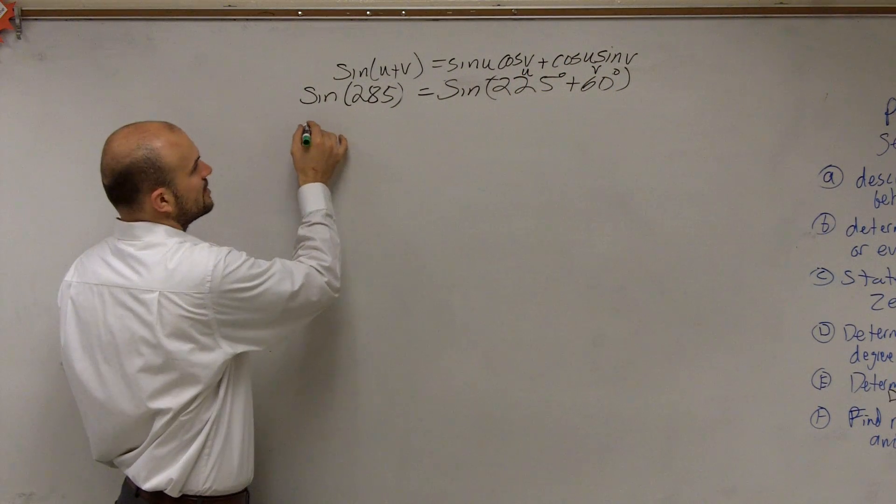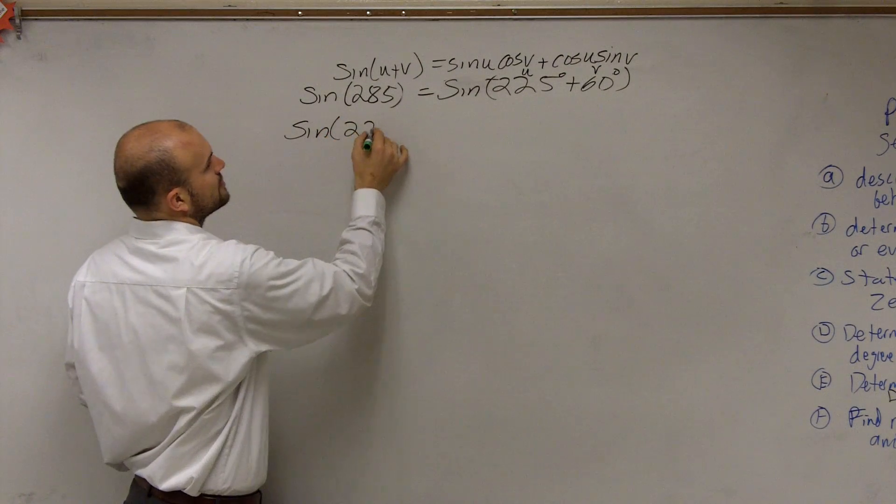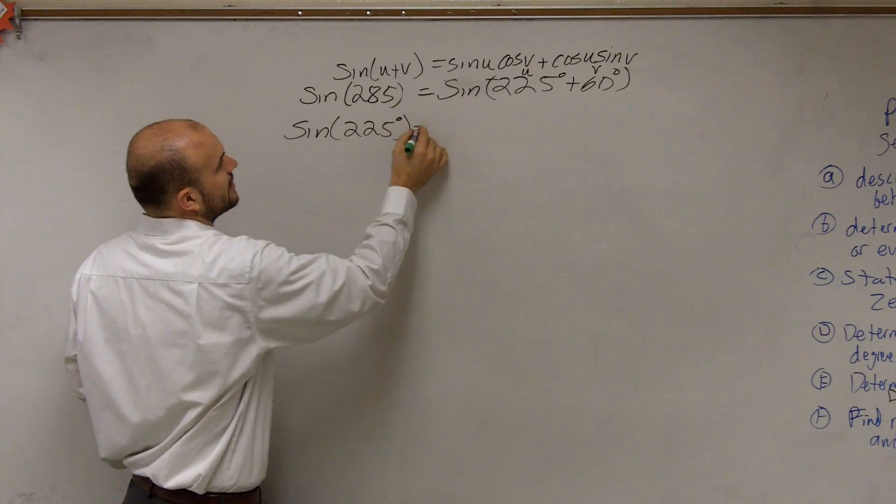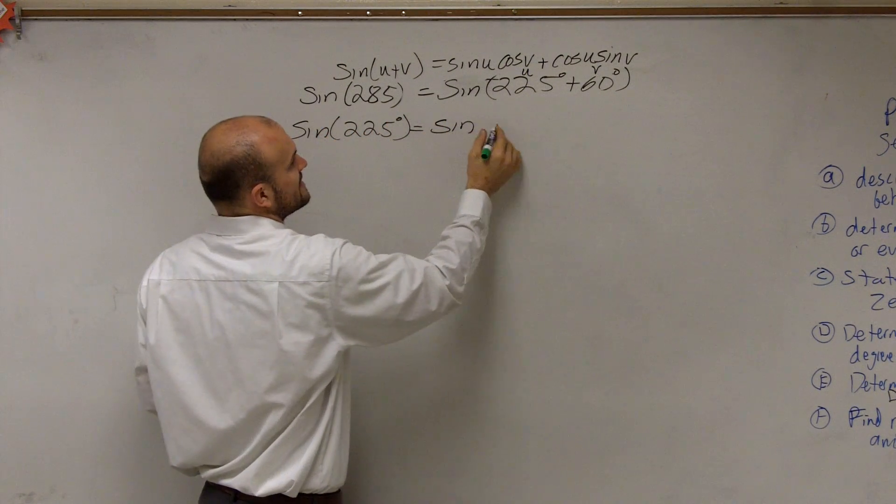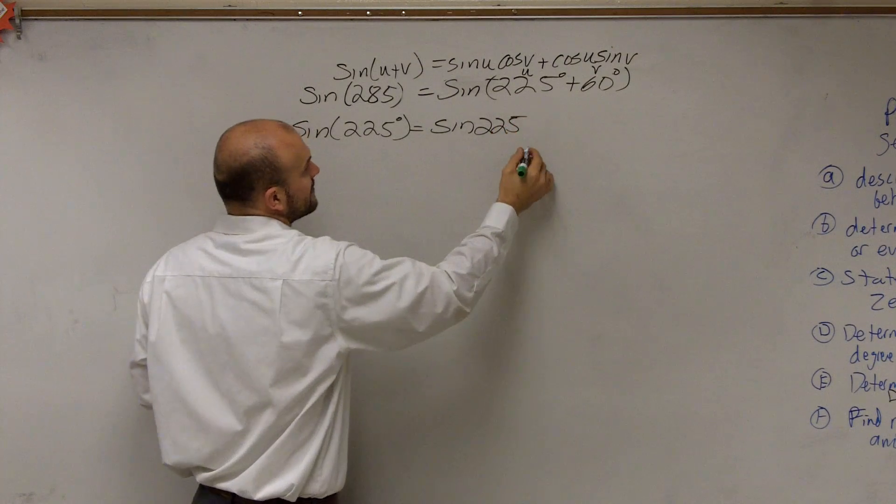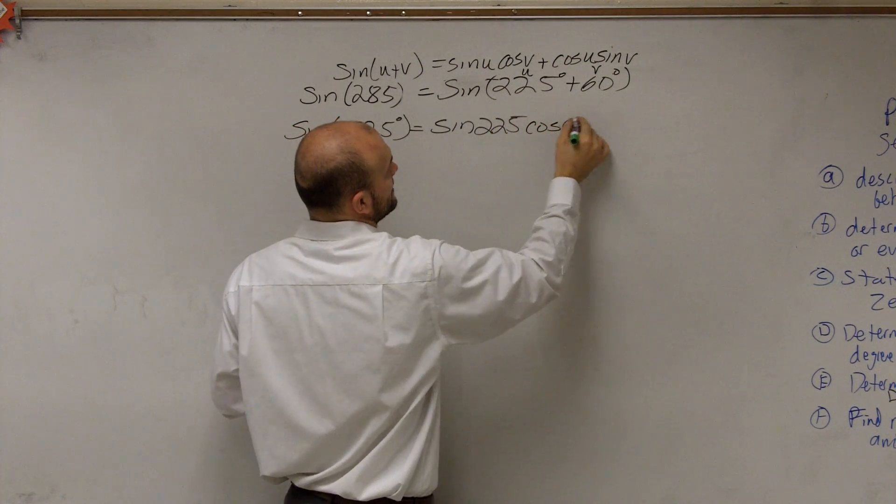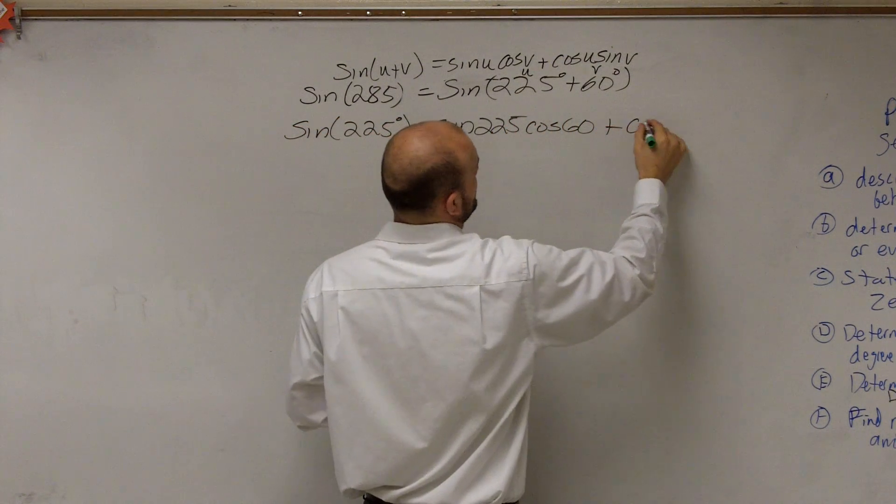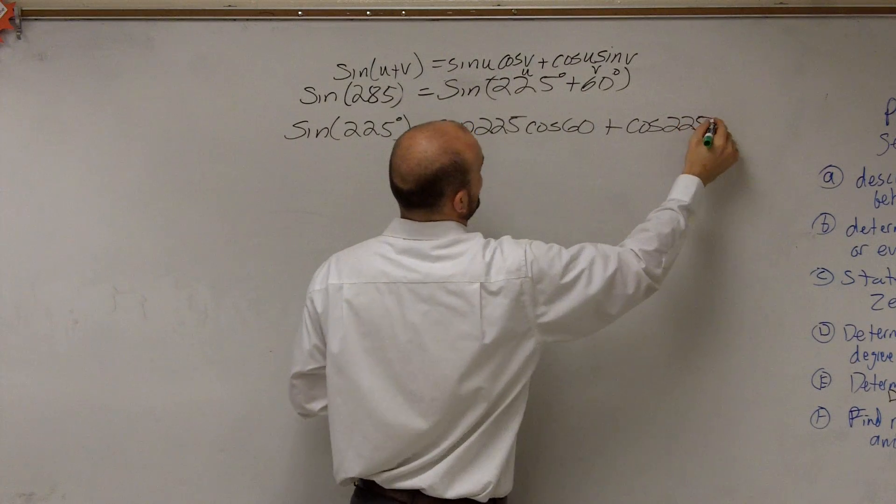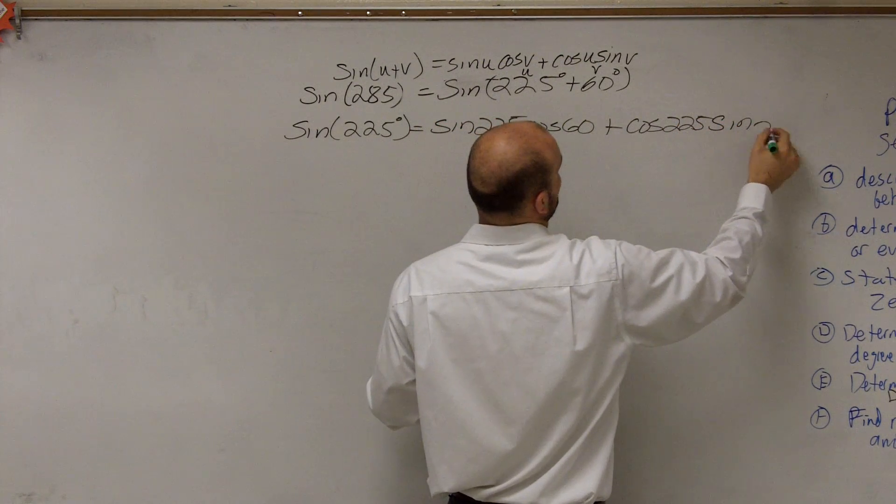Now let's plug them in. The sine of 225 degrees equals sine of 225 times cosine of 60, plus cosine of 225 times sine of 60.